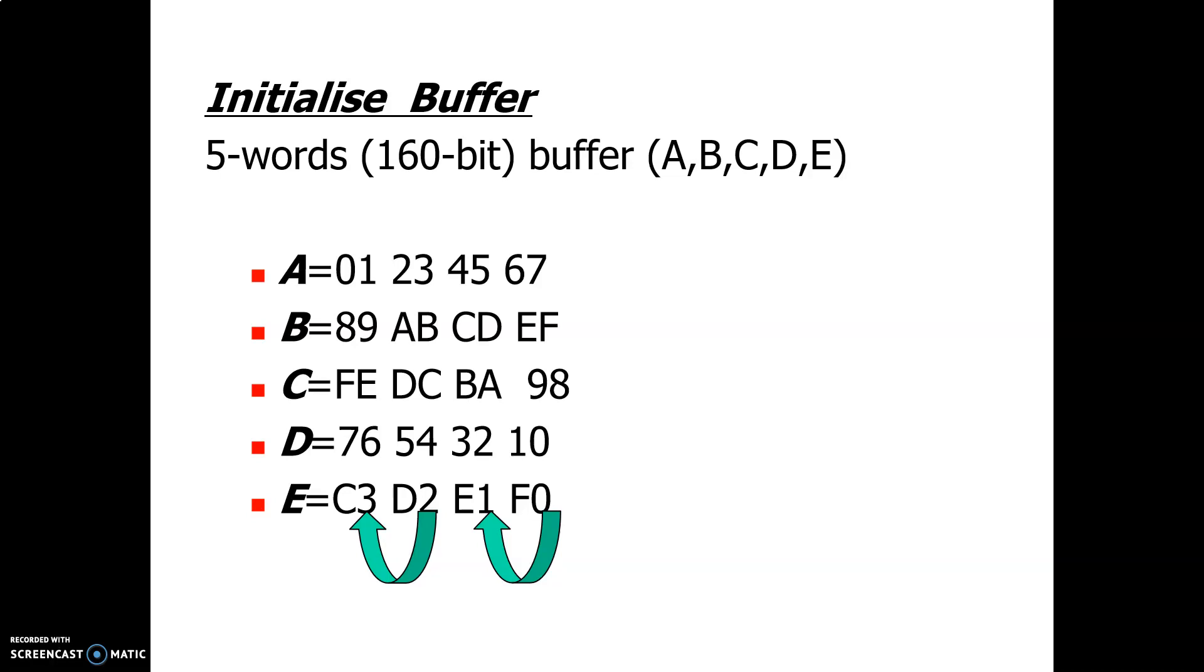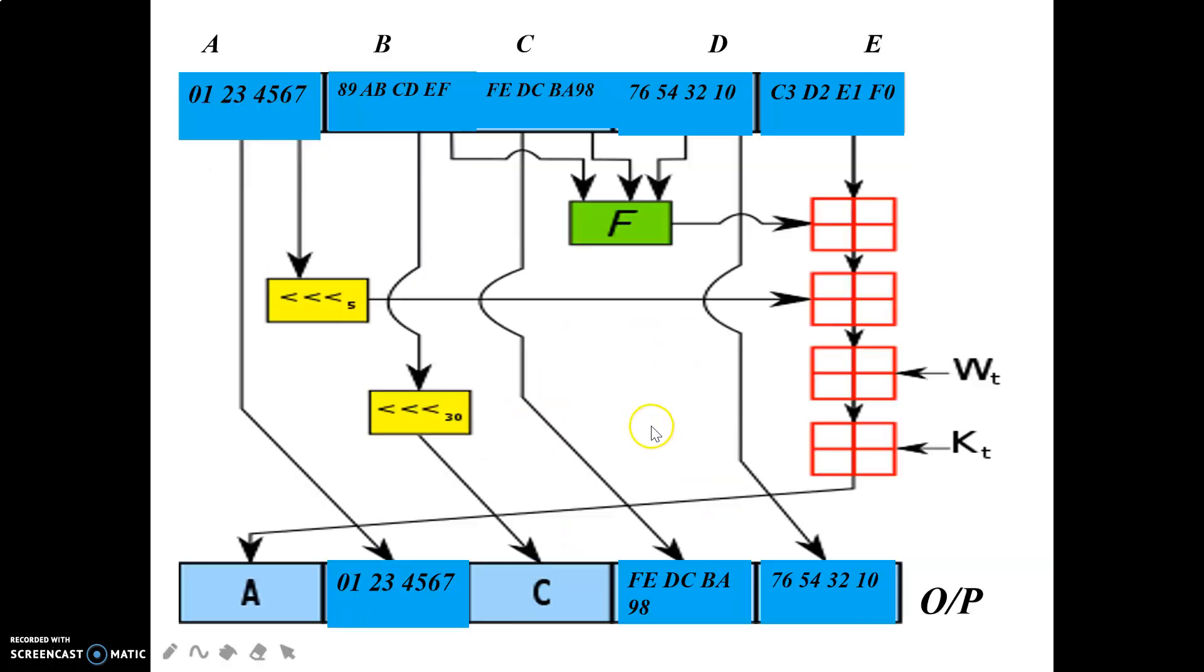We have seen in the last video that we have 5 words, one word is 32 bits, and then we have initialized the A, B, C, D, E buffers. Every buffer is of 32 bits. So we have put these values in A, B, C, D, E and now we have these values.